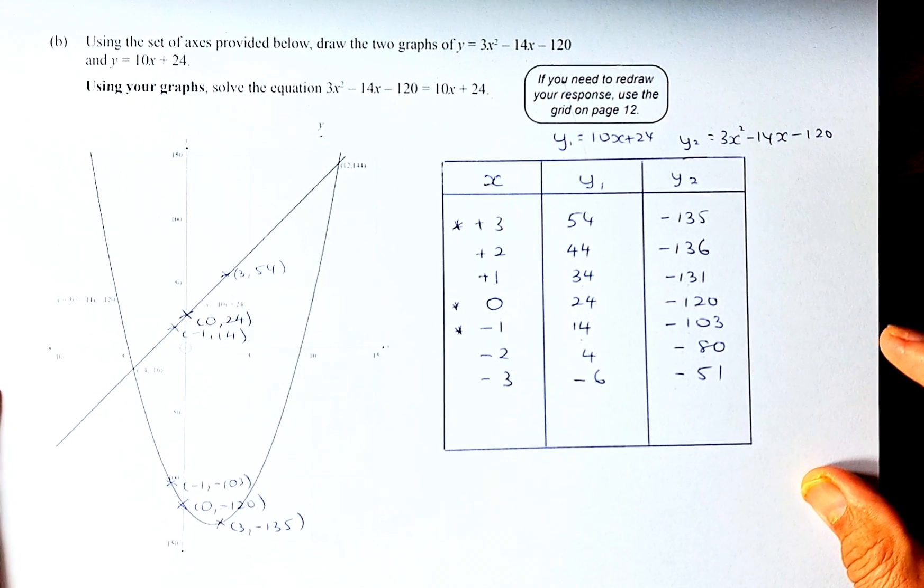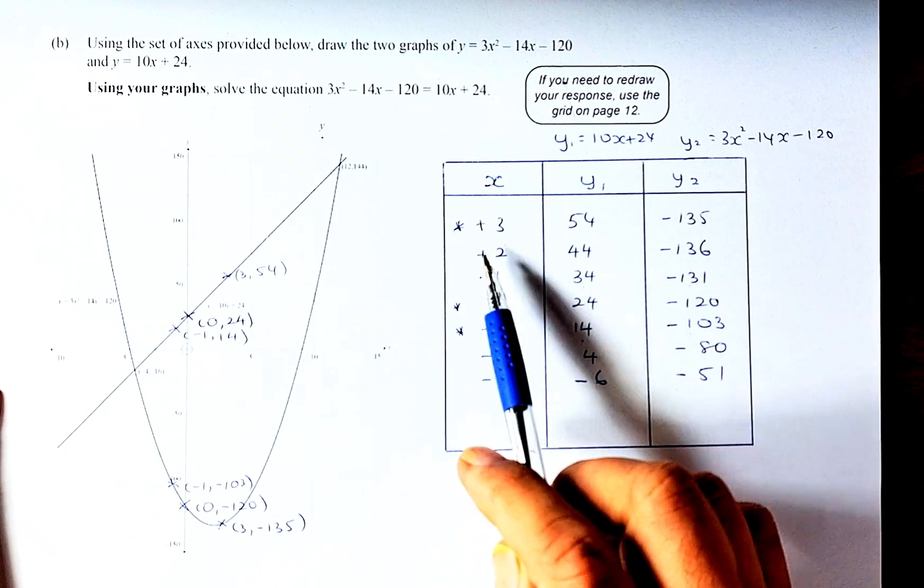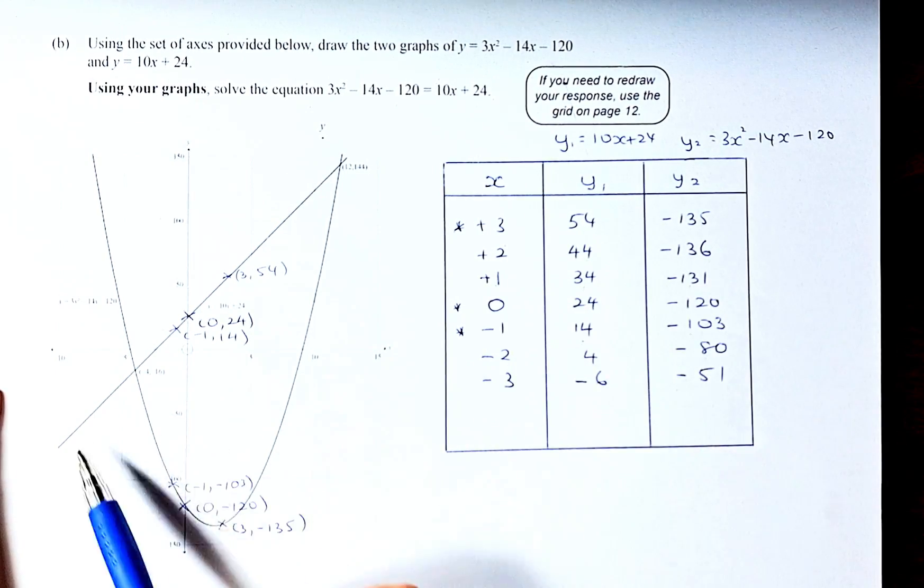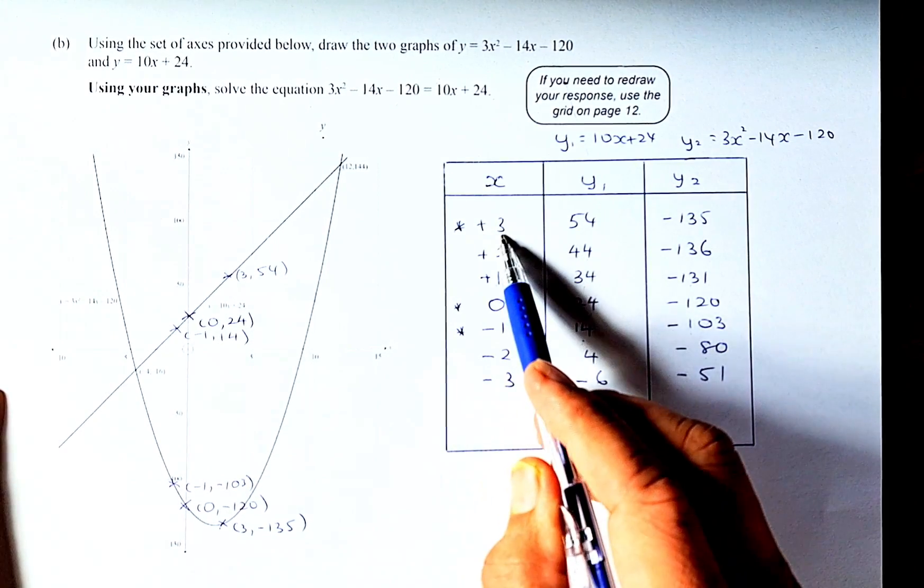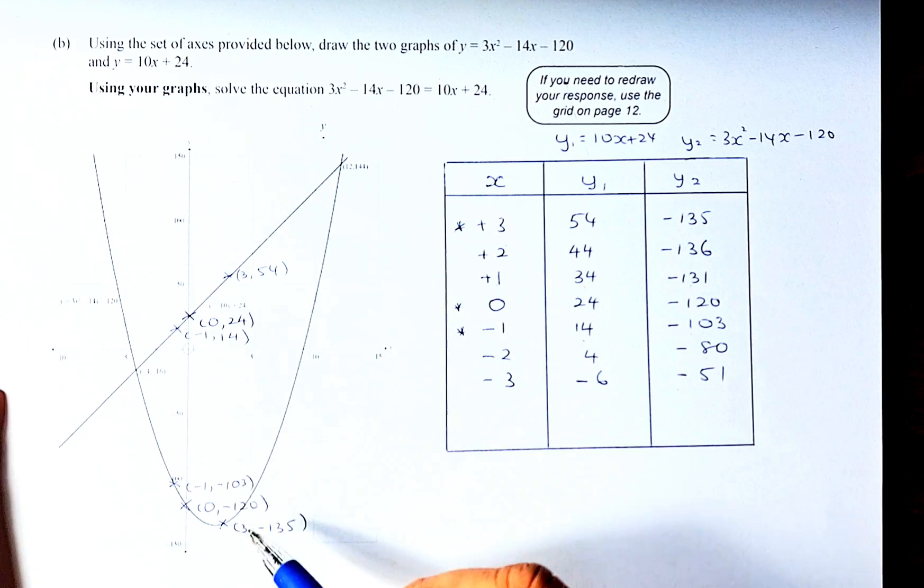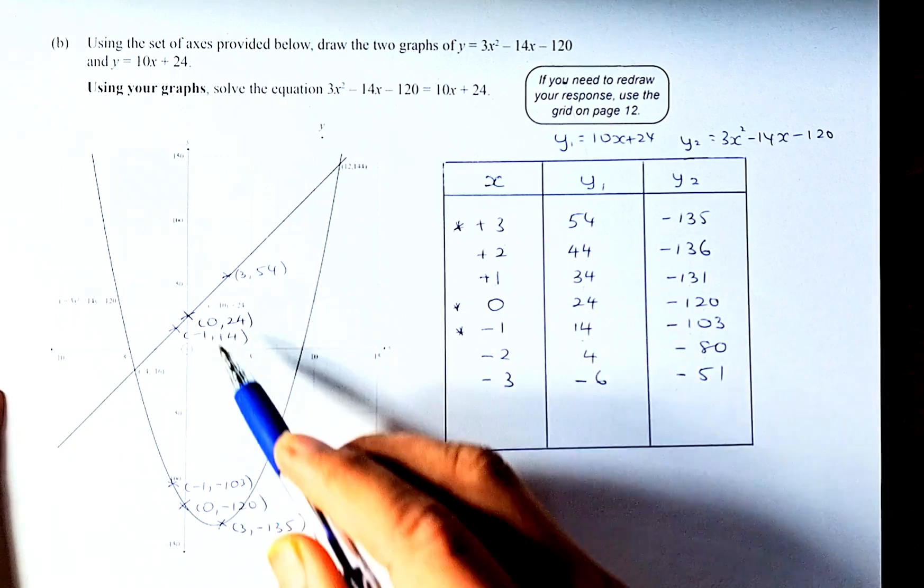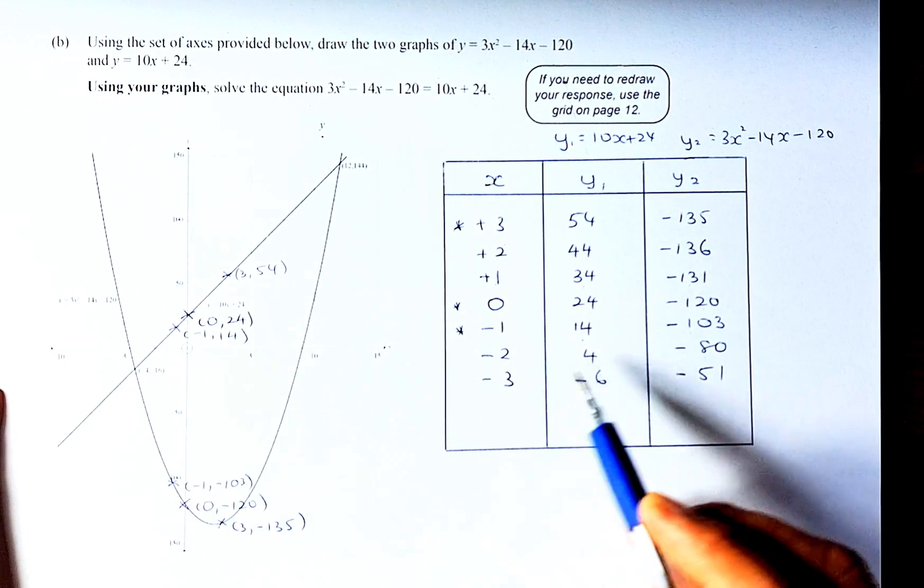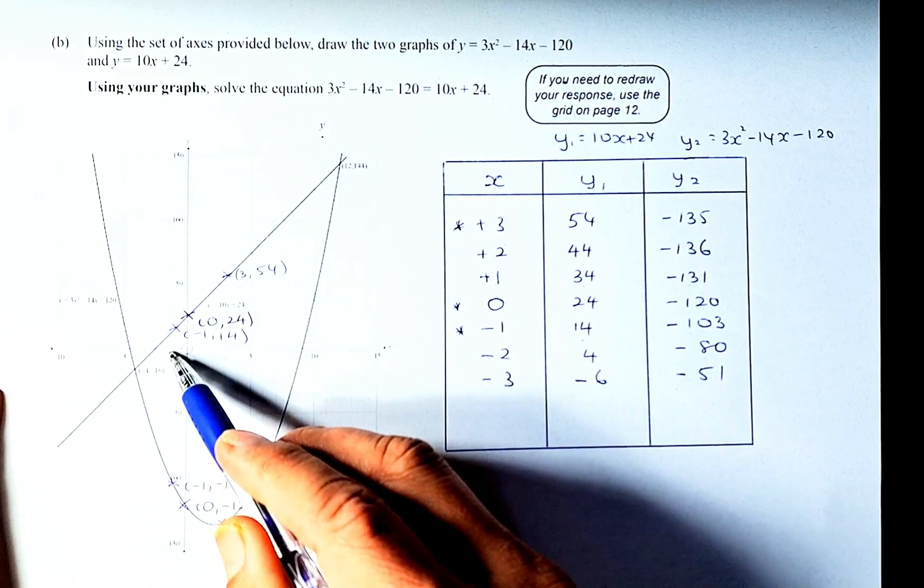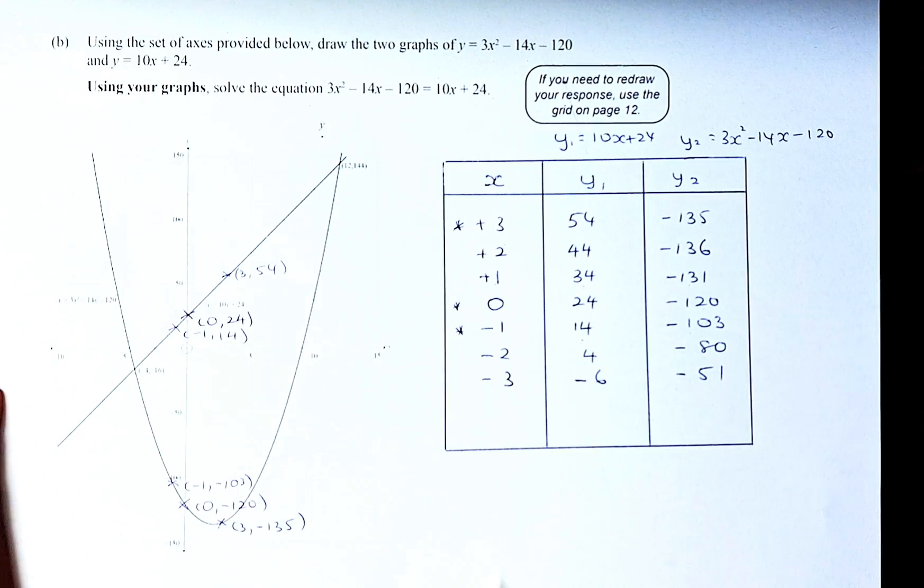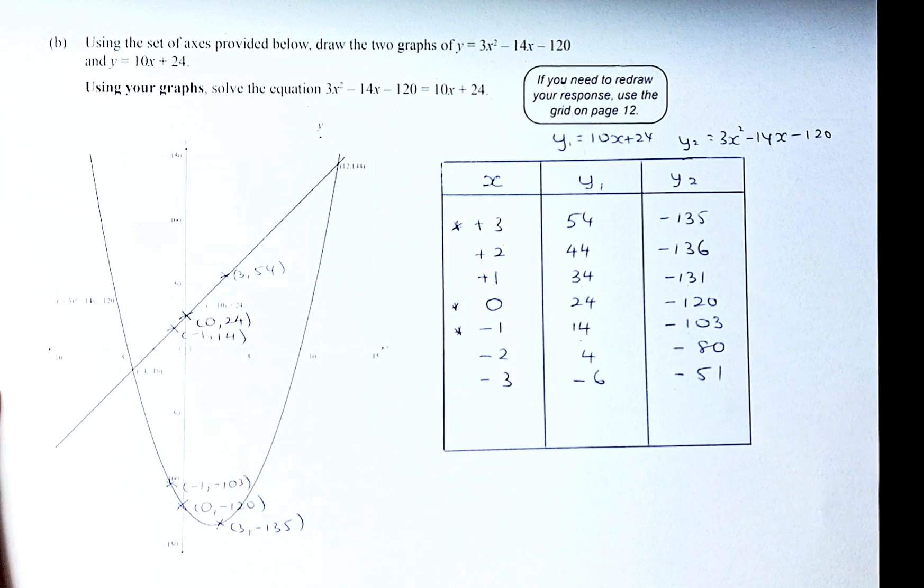For the quadratic graph, you need at least 5 points. Because we're short of time, we'll plot only 3 points: (3, -135), (0, -120), and (-1, -103). But in fact, you should plot at least 5 to 7 points to accurately draw the quadratic graph. Once you have drawn both graphs, the most important thing is to find the point of intersection.